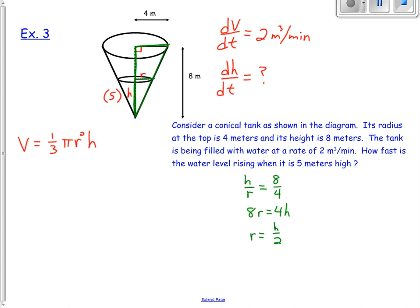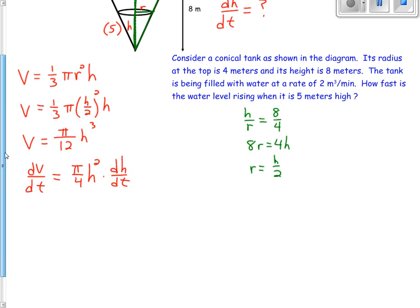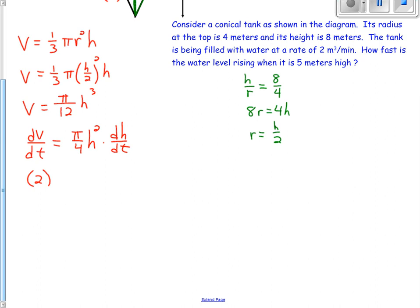We can cross multiply and I'm going to get r is equal to h over 2. That's perfect, because now I can replace r in my volume equation with h/2. So I'll get V = π/12 h³. Let's differentiate with respect to time: dV/dt. That's going to give me π/4 h² times the derivative of h with respect to time, dh/dt. Let's plug in some numbers.